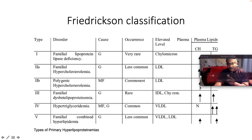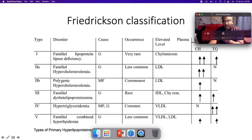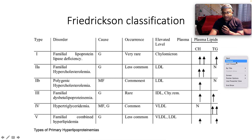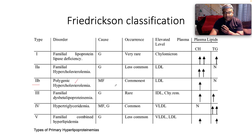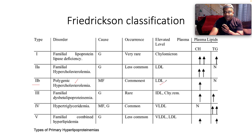This is the Fredrickson classification of our primary hyperlipoproteinemias. There are five different classes. The commonest one we're going to see is type 2b, which is what we call polygenic hypercholesterolemia. We have elevated levels of LDL — the bad cholesterol that contributes to atherosclerosis. It's the one that's oxidized and goes into the formation of foam cells and atherosclerotic plaque.